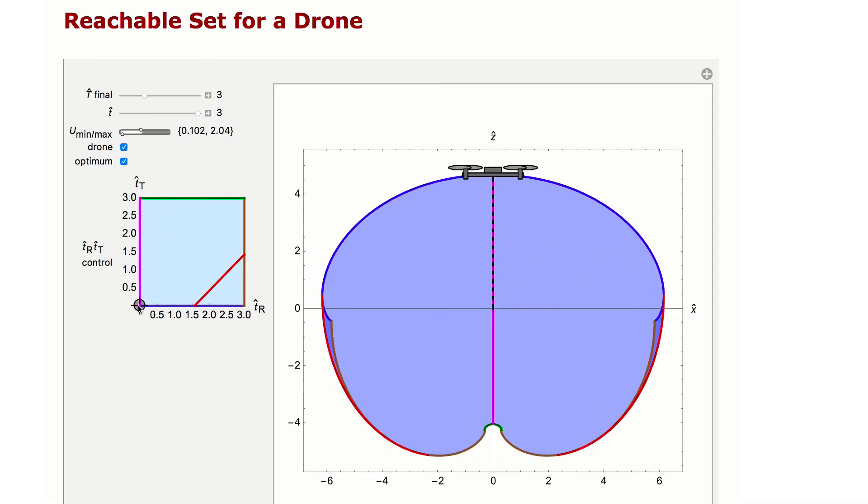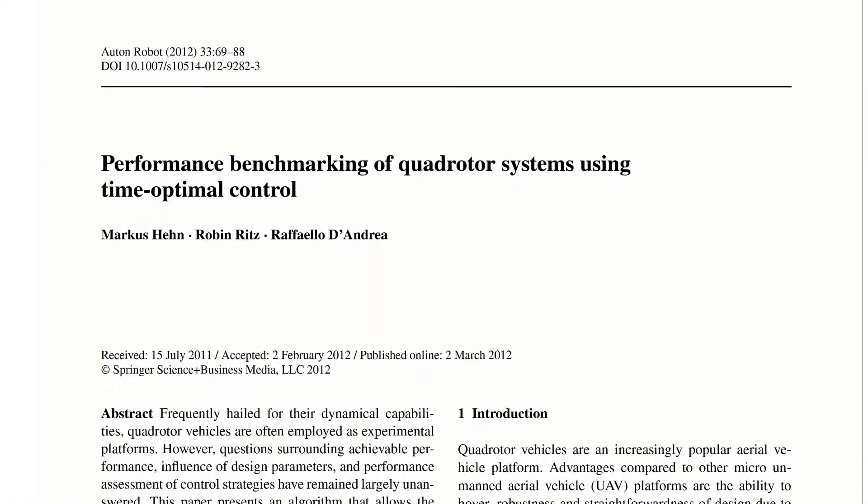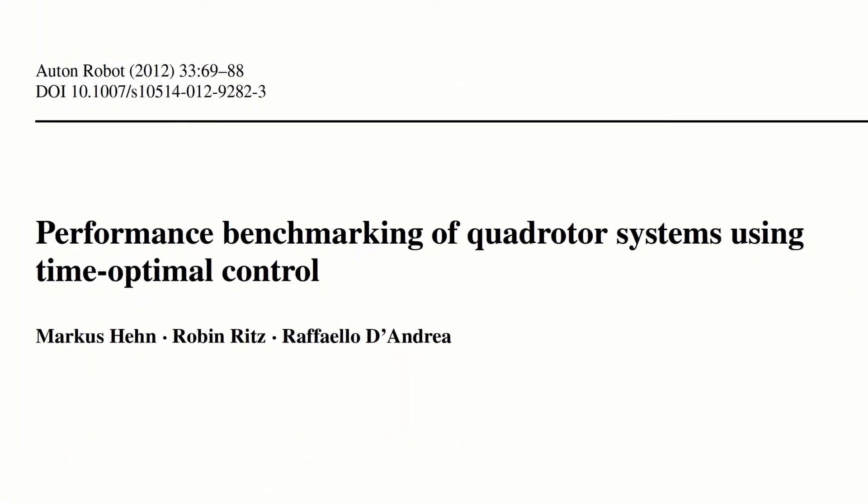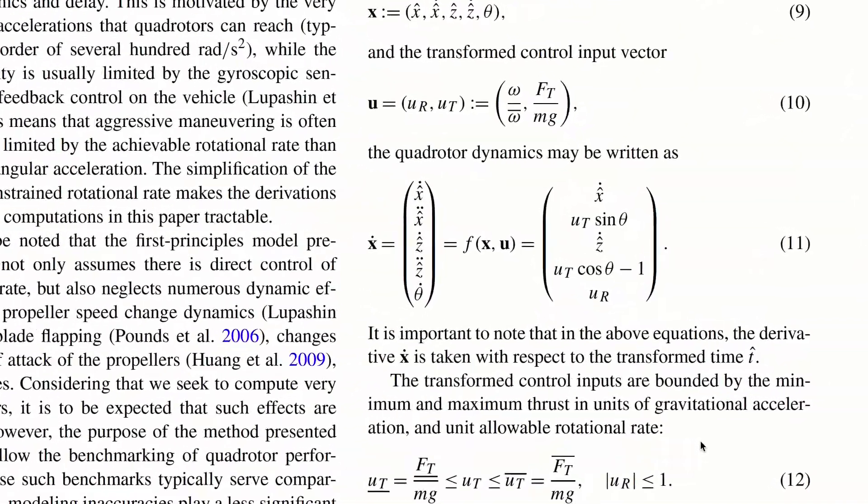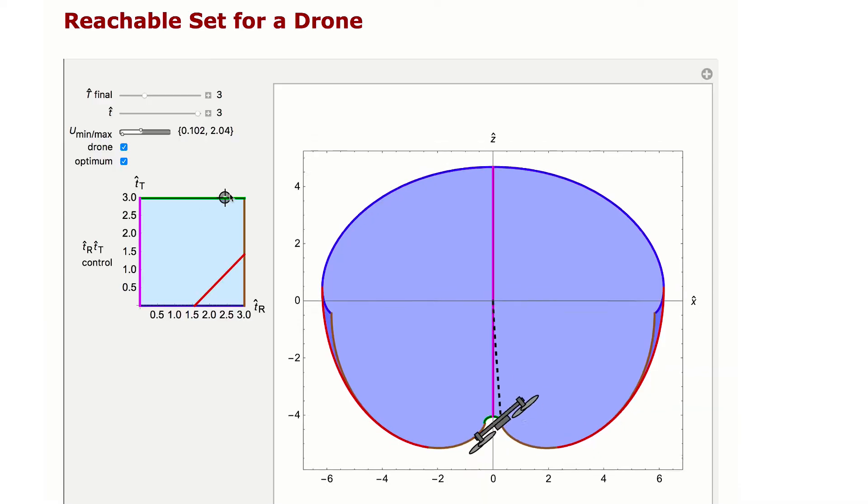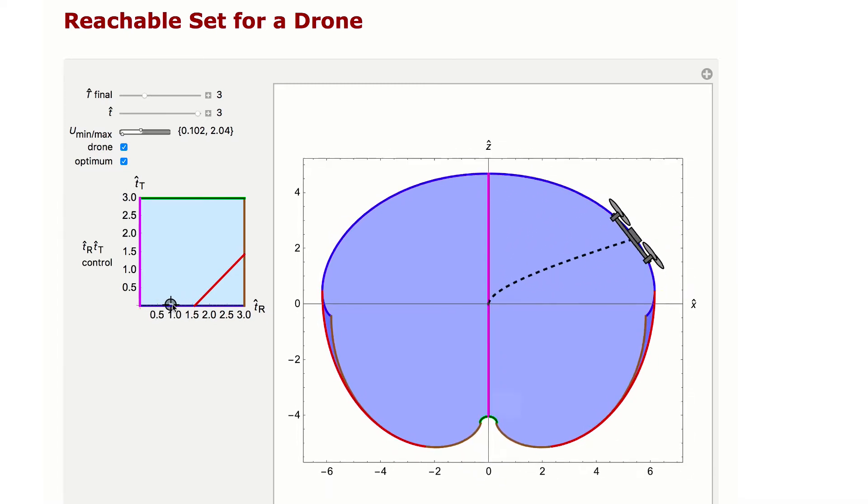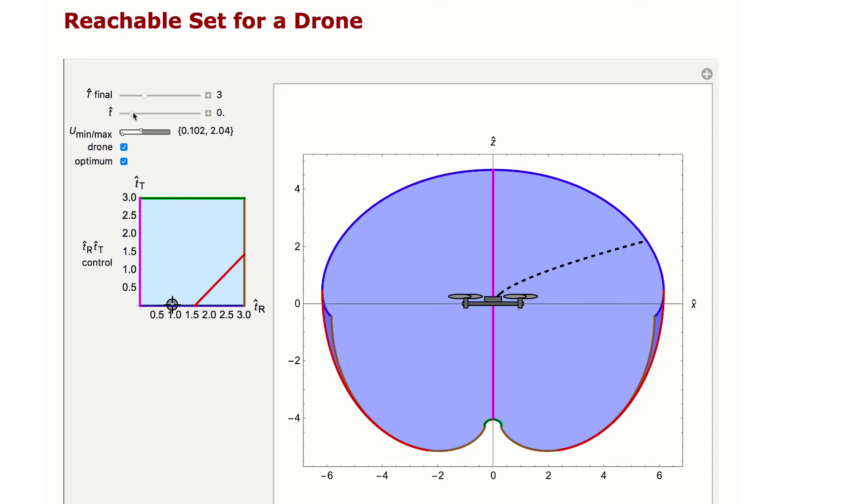We determine the set of time-limited positions reachable by a quadcopter by using a simplified 2D model for quadcopter dynamics. This popular model is used to determine the set of candidate optimal control sequences to build the reachable set. The model is non-dimensionalized, so it can be parameterized by just two values, the maximum and the minimum thrust.